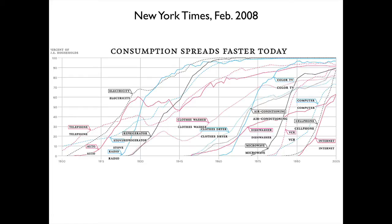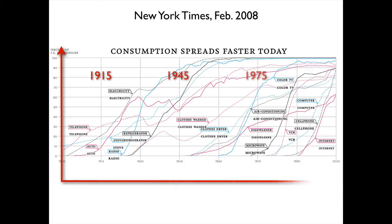But nonetheless, here's how I explain this diagram in my IT workshops. Firstly, we have on the y-axis the percentage of households, and on the x-axis the time in years between 1915, roughly, and 2005.